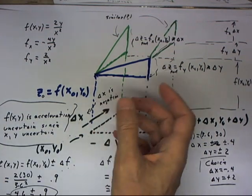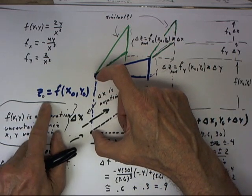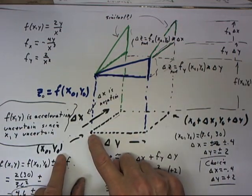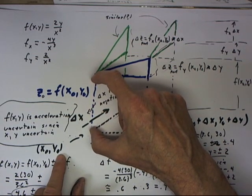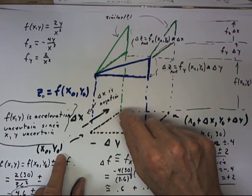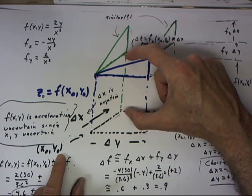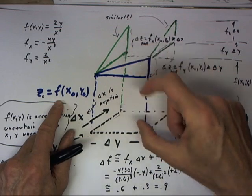These changes are built on the value z0 equals f of x0, y0 that we got at the point x0, y0. So that, as we move in the x direction, we add this delta z to the value z0 that we started with.